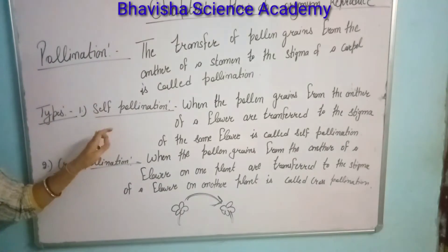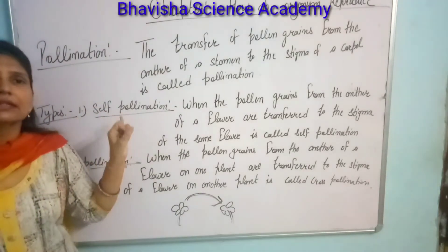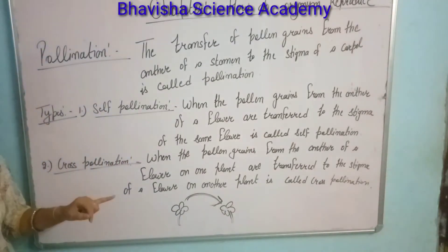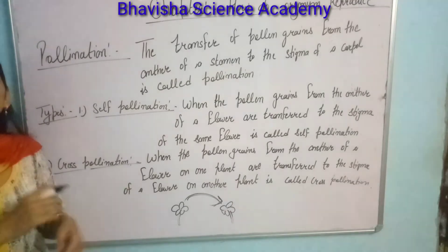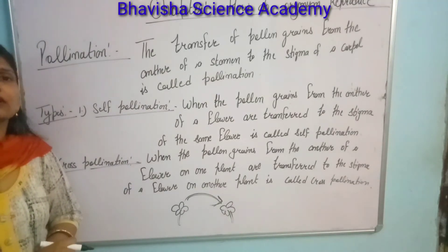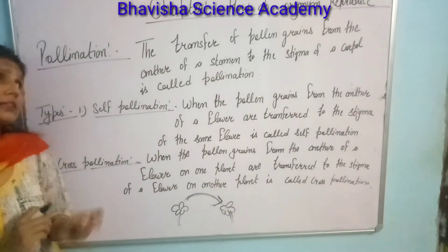Self-pollination occurs inside the same plant. Cross-pollination occurs between different plants. That is known as cross-pollination.